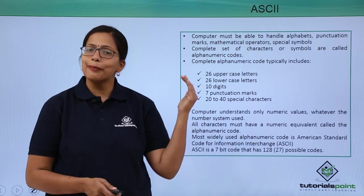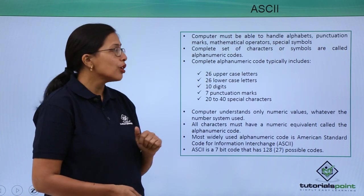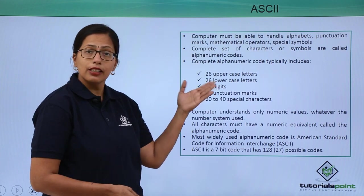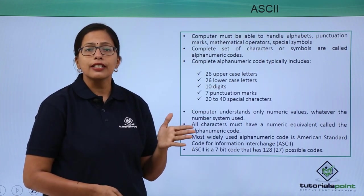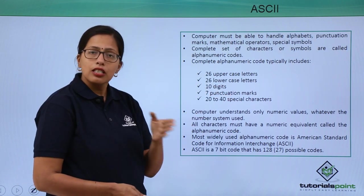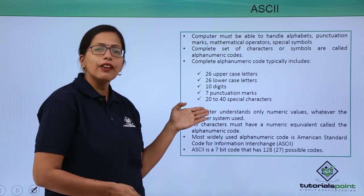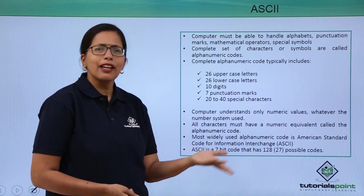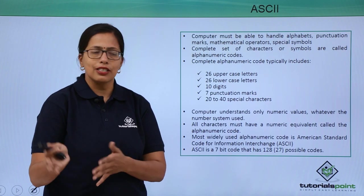So the computer needs to have a complete set of alphanumeric codes. These alphanumeric codes should cover the 26 uppercase letters — capital A to Z — 26 lowercase letters, 10 digits (0 to 9), 7 punctuation marks, and anywhere between 20 to 40 special characters, like greater than, equal to, comma, slashes, etc.